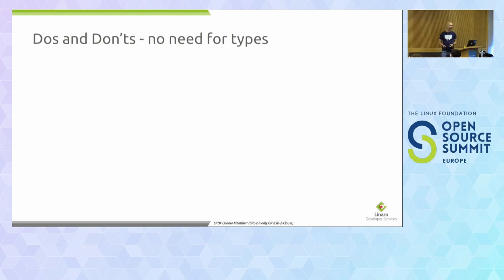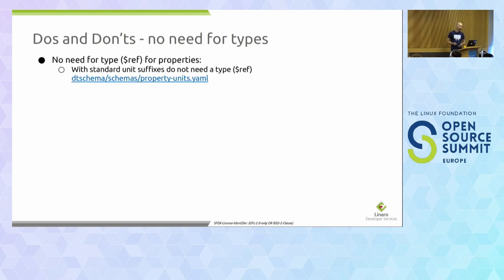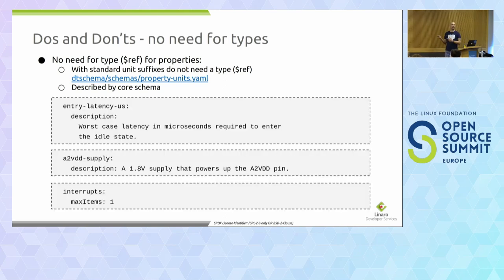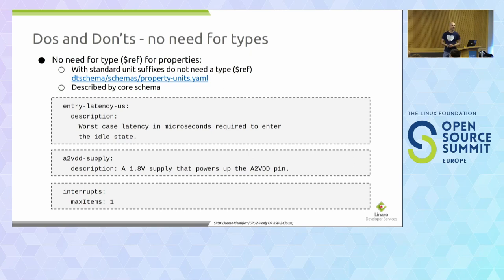You don't need types for certain cases. The type — which is this ref — you can skip it if you have a standard unit suffix in the property name, like microvolt. There's a list of them with a link to check. Or where properties are already described by the core schema. Examples: entry-latency-us — US is for microseconds, standard unit prefix, no need for type. A supply property is a regulator pattern from the core schema, again no type reference needed. Interrupts is also well-defined by the core schema and even lacks a description — I will mention why later.